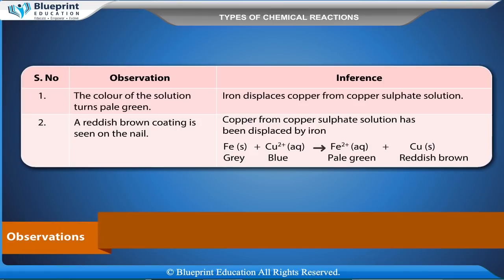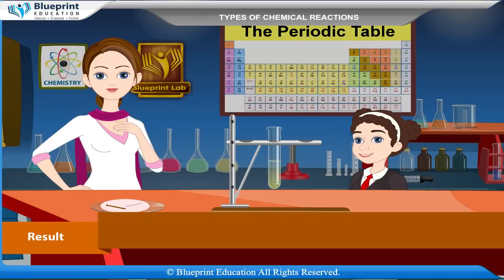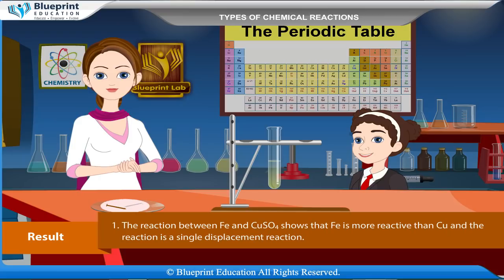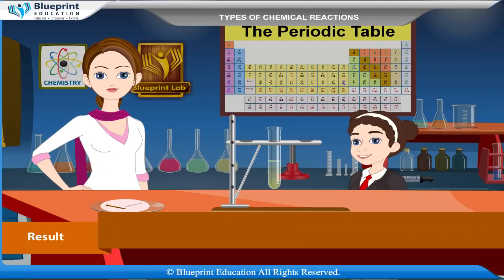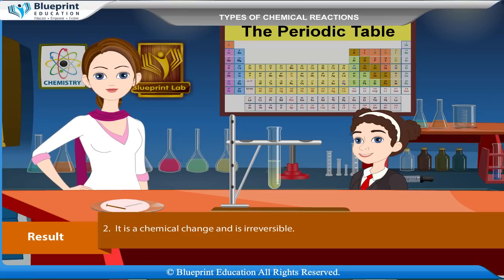Observations: (1) The colour of the solution turns pale green — iron displaces copper from copper sulphate solution. (2) A reddish-brown coating is seen on the nail — copper from copper sulphate solution has been displaced by iron. Equation: Fe(s) grey + Cu²⁺(aq) blue → Fe²⁺(aq) pale green + Cu(s) reddish-brown. Result: Iron is more reactive than copper; this is a single displacement reaction, a chemical change, and is irreversible.